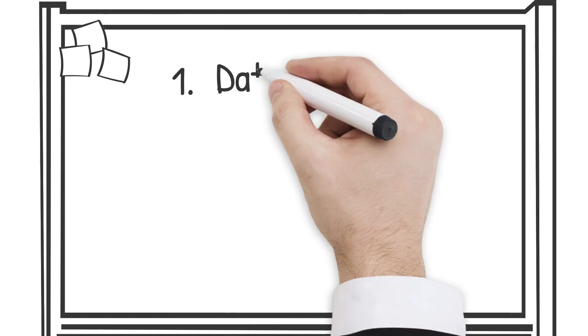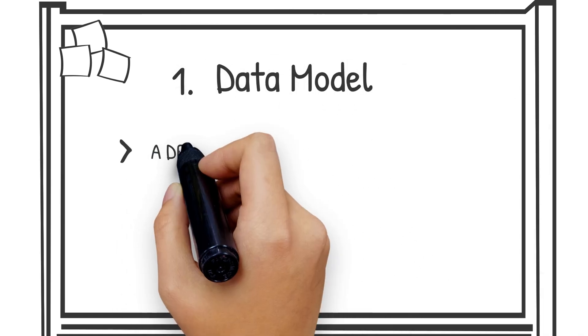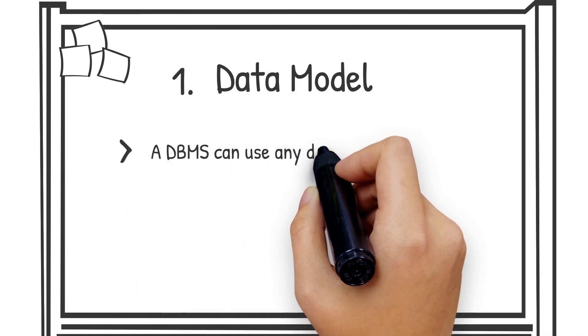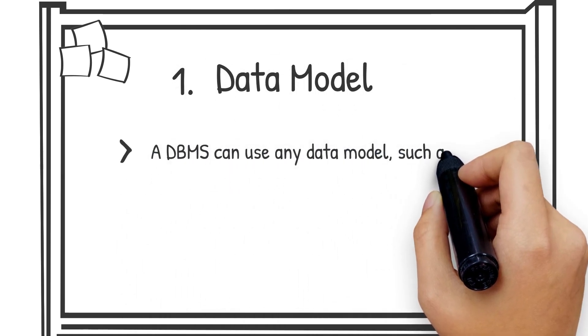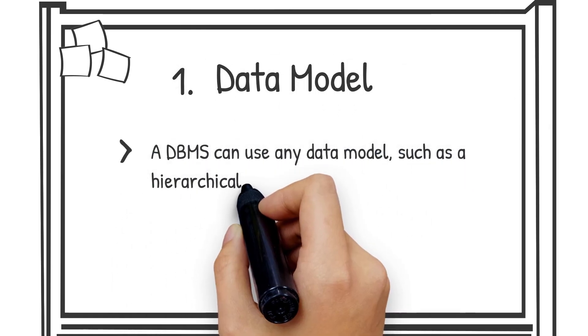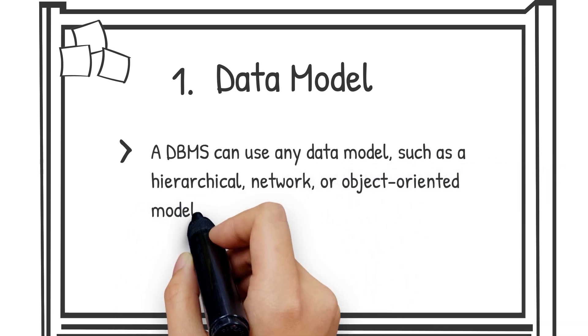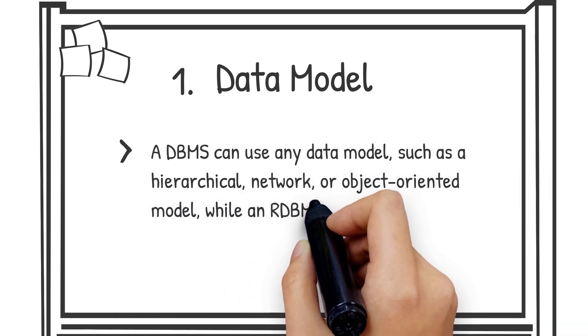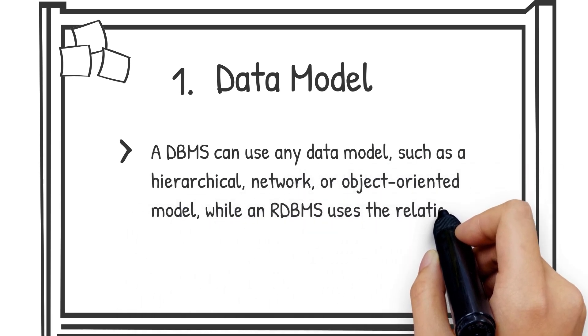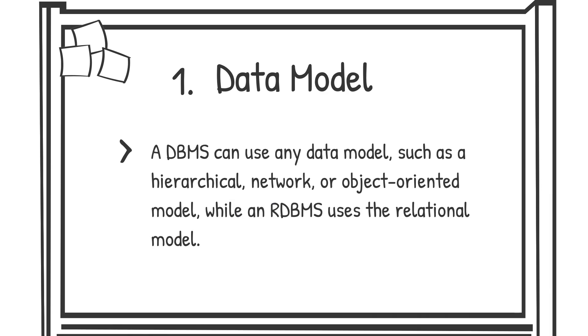Number one, data model. A DBMS can use any data model, such as a hierarchical, network, or object-oriented model, while an RDBMS uses the relational model.